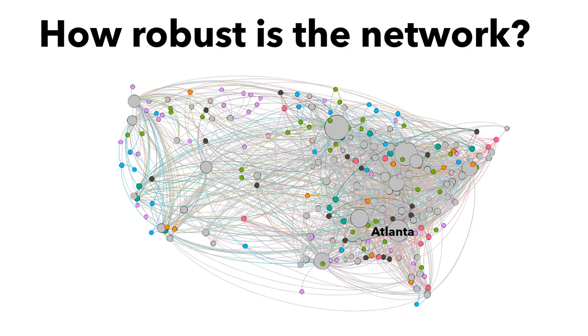However, if we remove hubs, the networks will immediately fall apart. Those hubs are the Achilles heel of the scale-free networks.